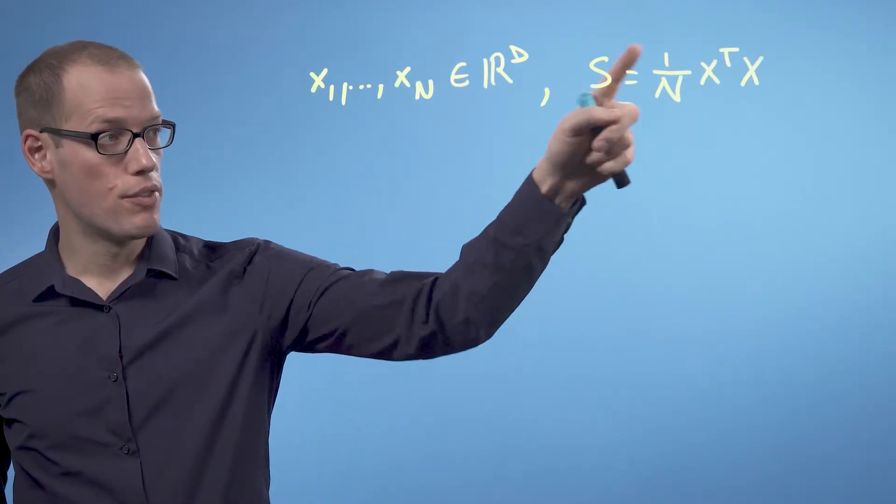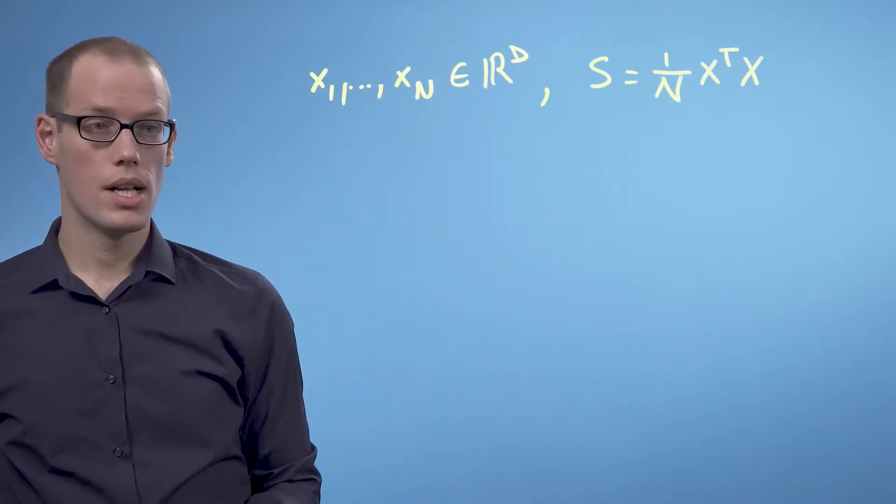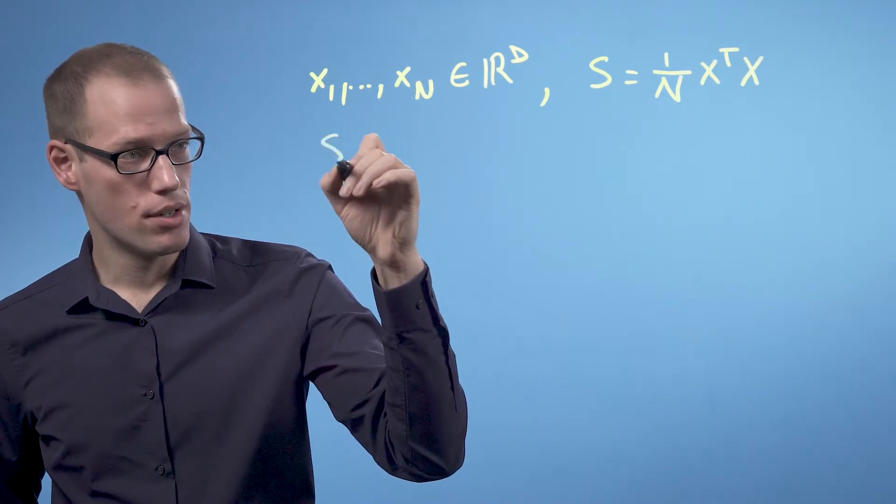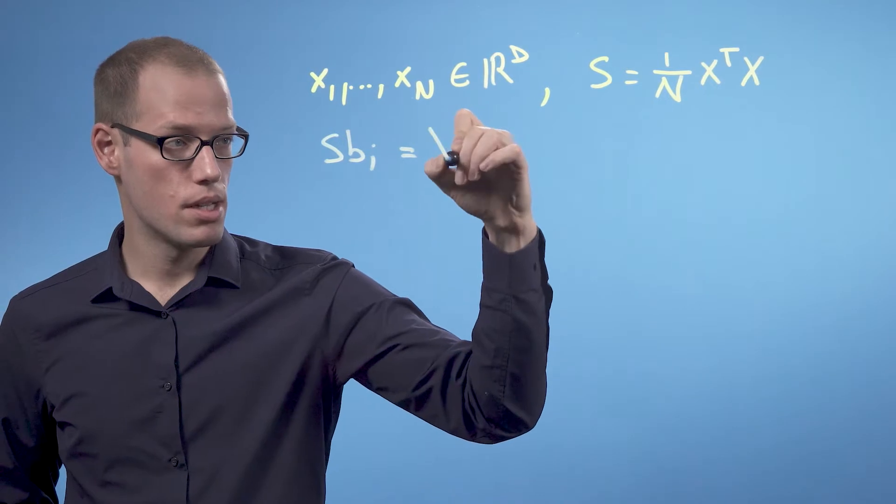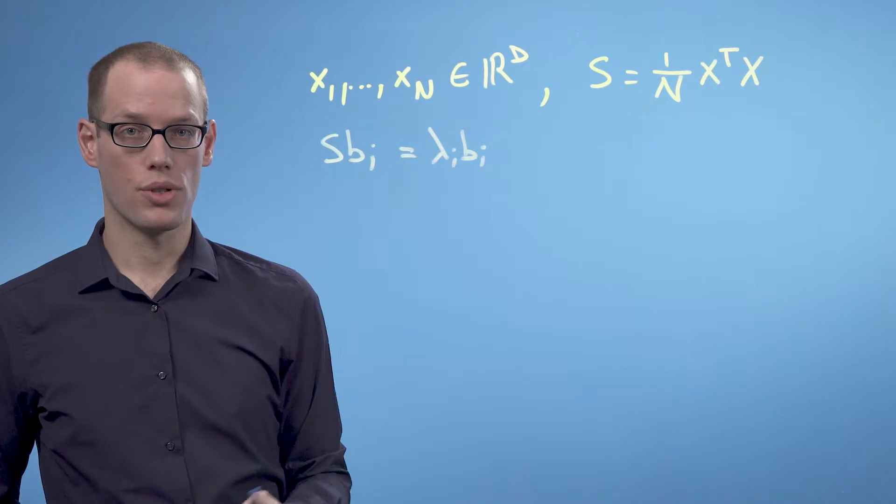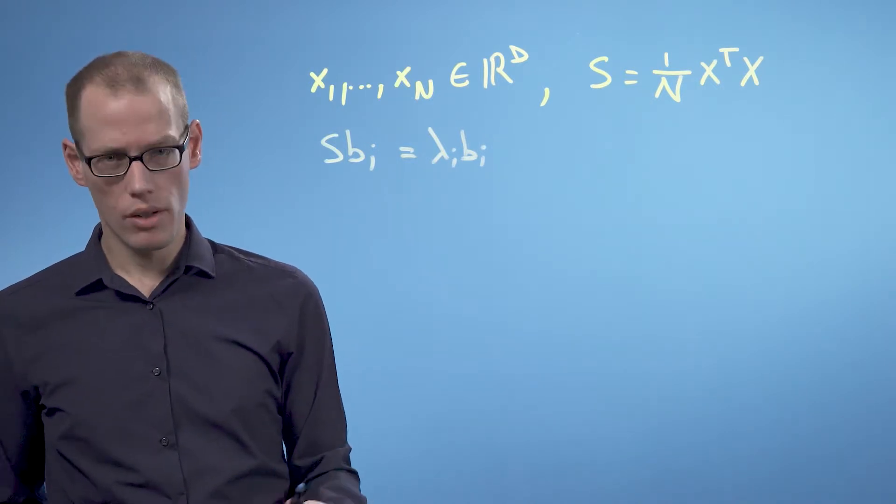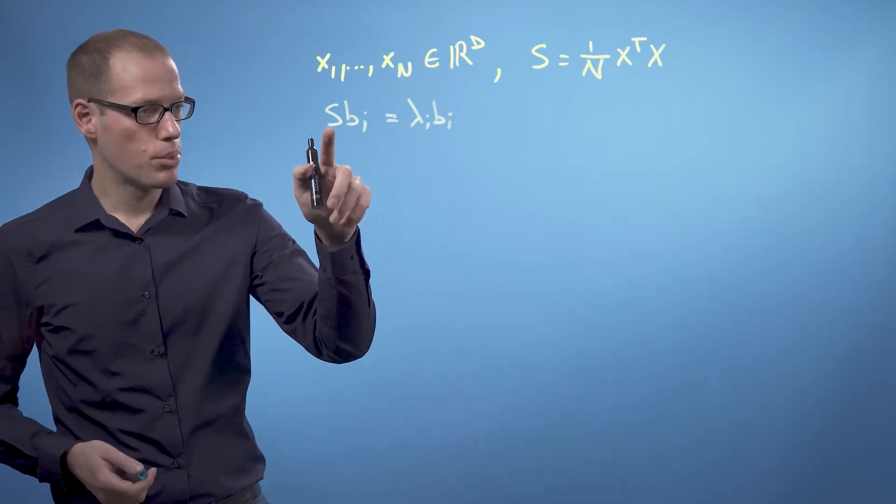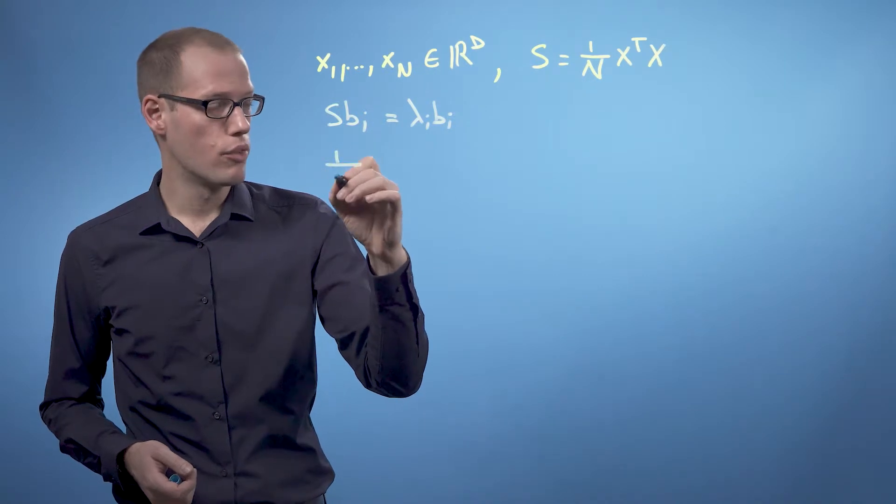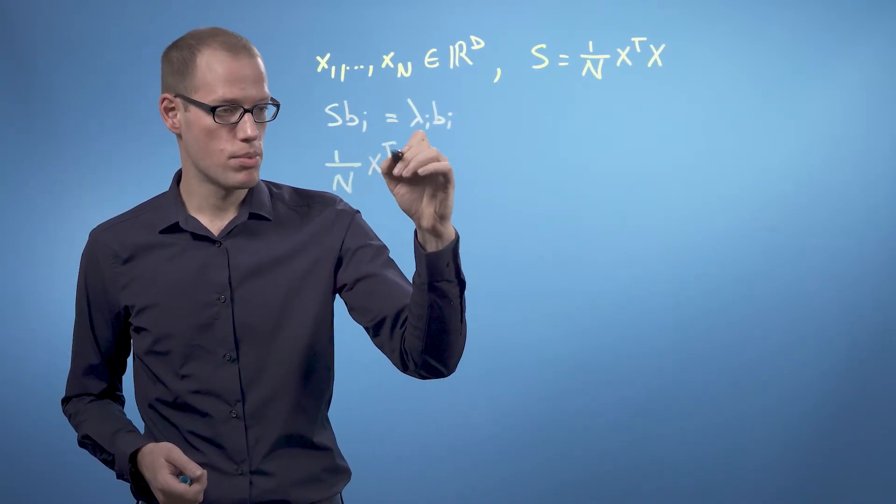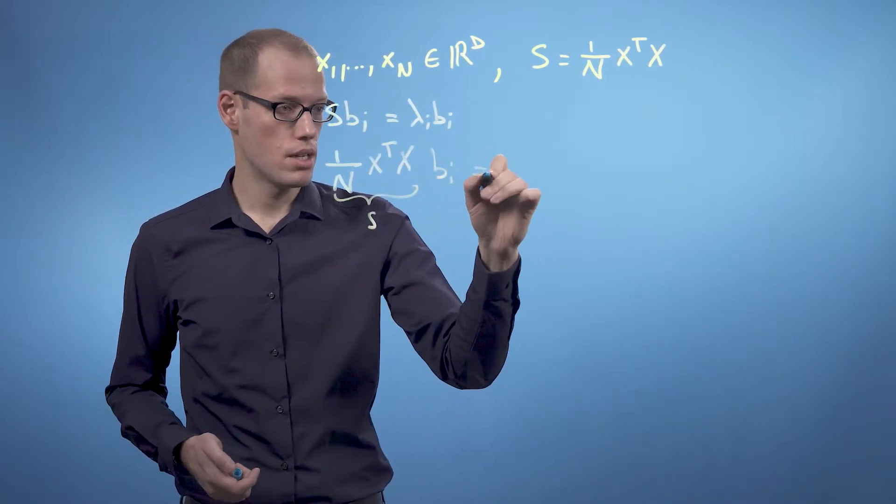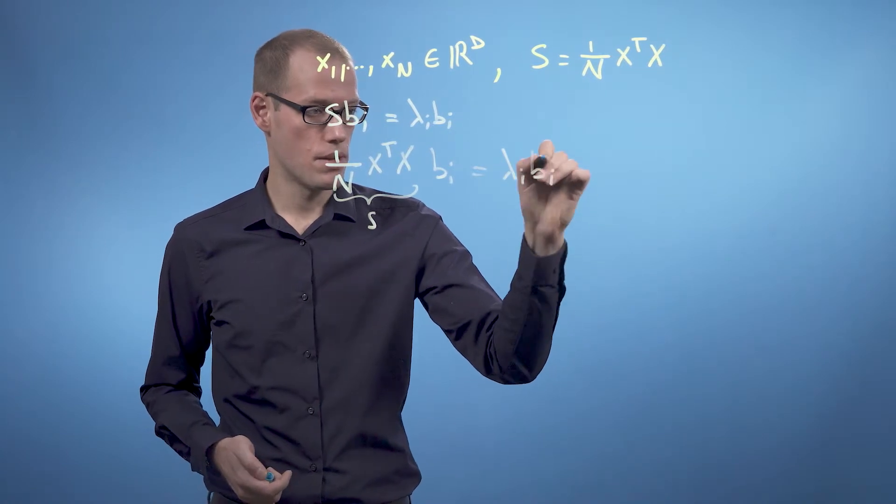I've just moved the covariance definition up here to have a bit more space on the board. In PCA, we ended up with the following eigenvalue eigenvector equation: S b_i = λ_i b_i, where b_i is a basis vector of the orthogonal complement of the principal subspace. Now let's rewrite this equation a little bit. We're now going to replace S with the definition up here. So we'll get 1/N X^T X, this is S, times b_i equals λ_i times b_i.